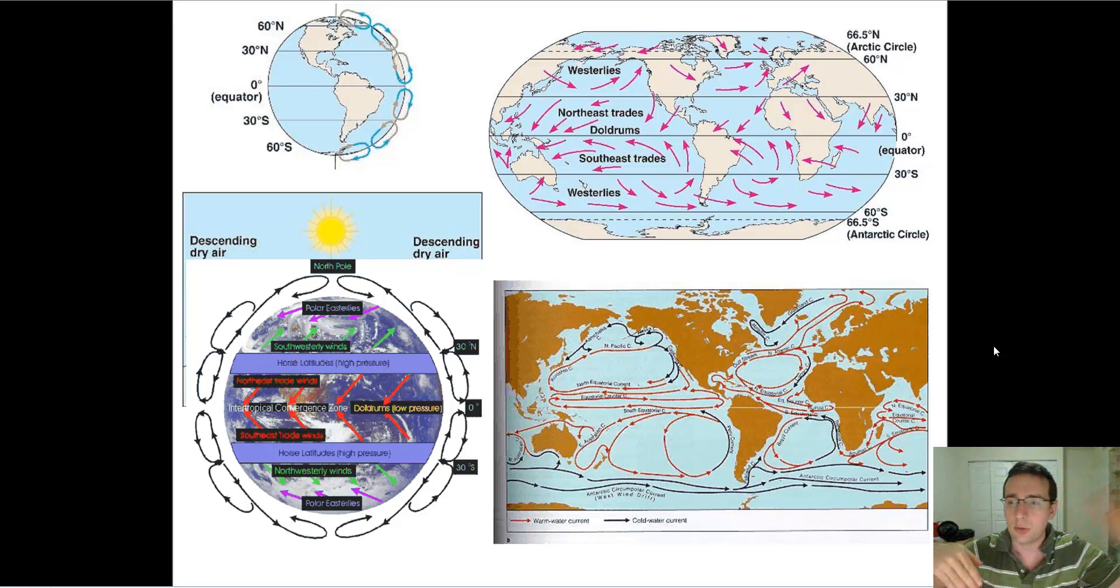So the winds will circulate from poles to equator and from the equator back to poles. And as they do that, they will carry the warmth of the equator towards the poles and the cold of the poles towards the equator, which makes the temperature of the world a lot more mild than it would be. Otherwise, the equator would be a lot hotter and the poles would be a lot colder if it wasn't for these things.